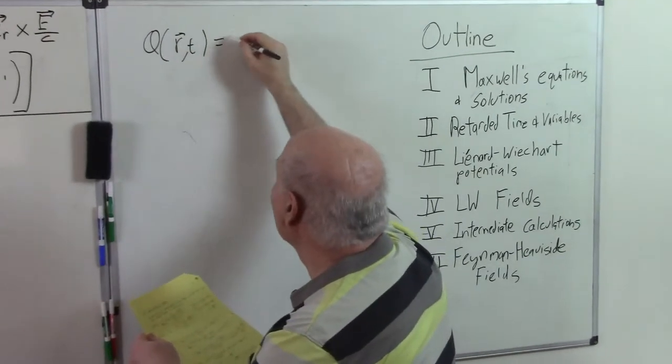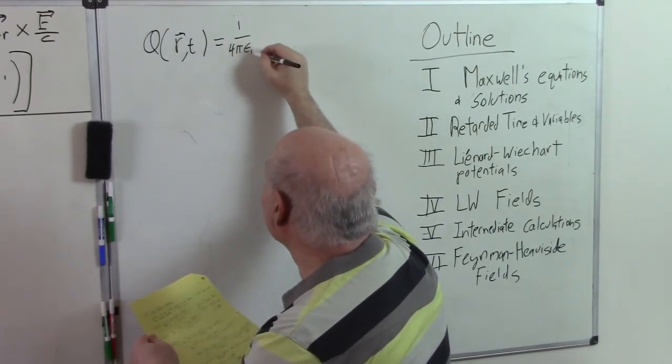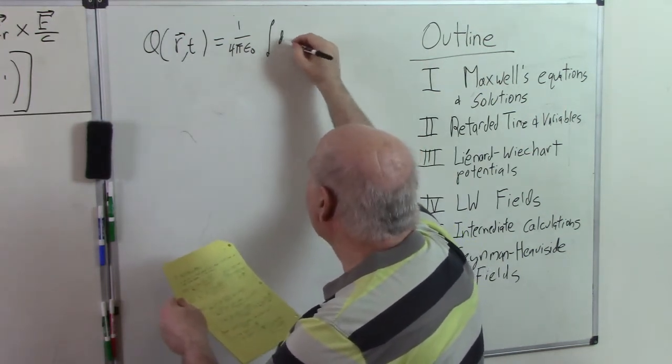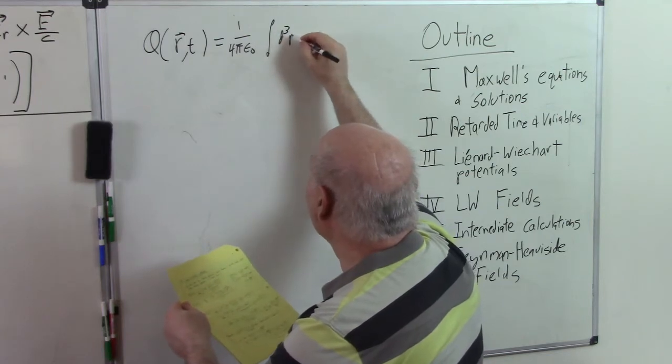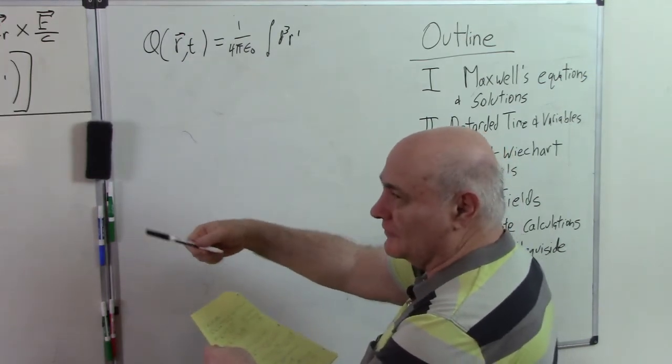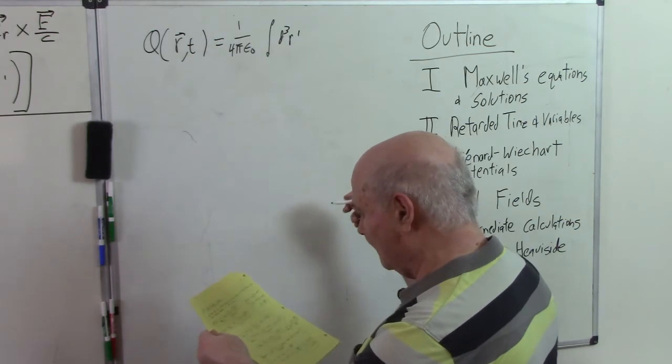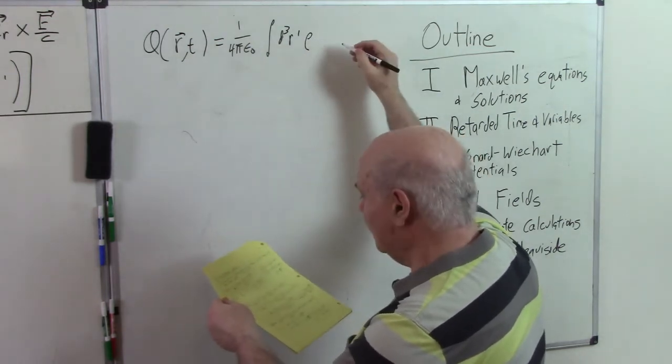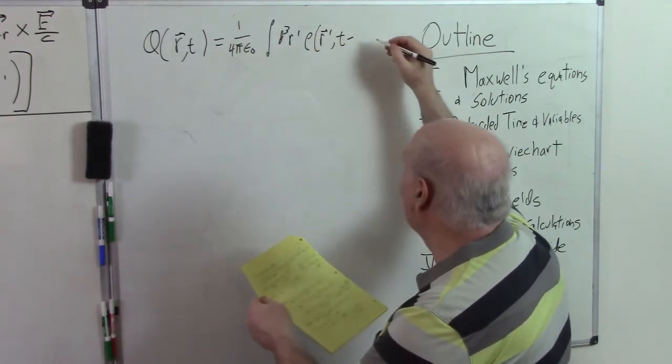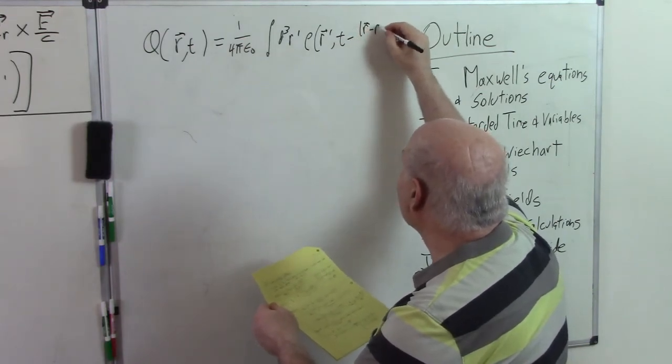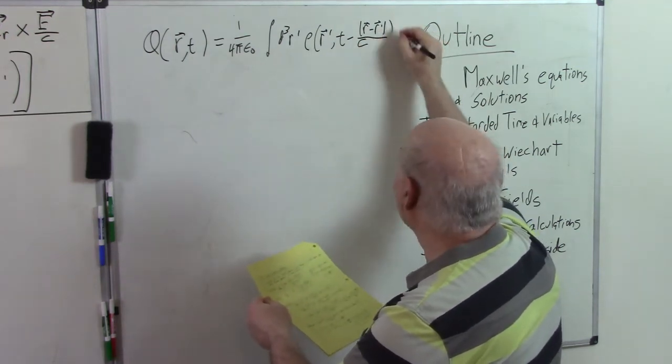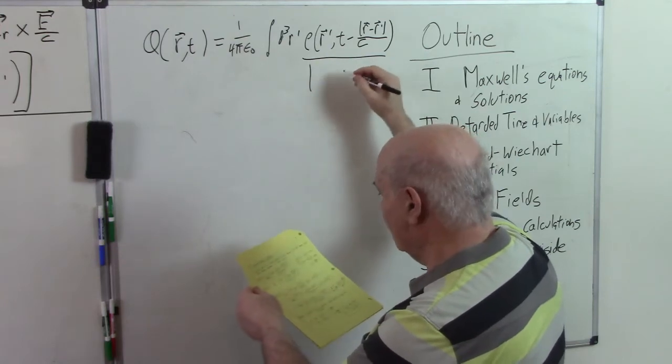We have our potentials which I wrote in Maxwell's equation solutions. V(r,t) equals 1 over 4π epsilon_0, the integral d³r prime. I'm thinking I put the q in there but the q is in the charge density, so I made a mistake in that video two videos ago. There shouldn't be any q there.